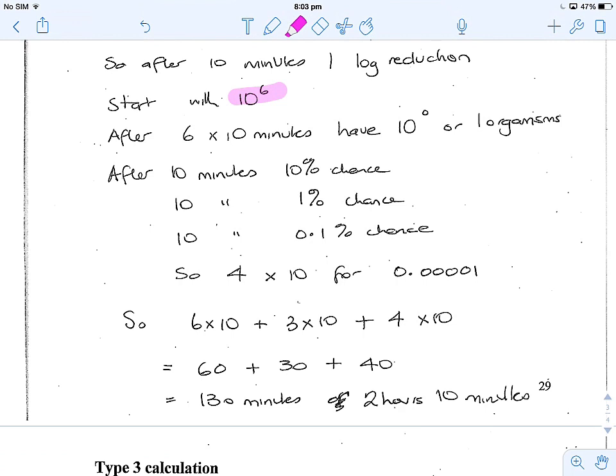So with 6 lots of 10 minutes, that will reduce it from 10 to the 6 down to 10 to the 0. But remember, 10 to the 0 is not 0 organisms, 10 to the 0 is 1. So what happens after a further 10 minutes?